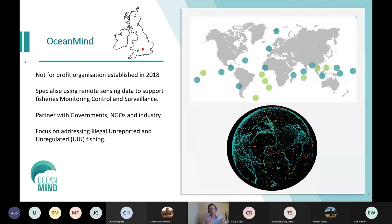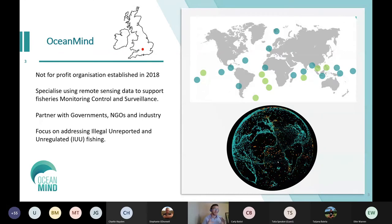I work for an organization called OceanMind, a not-for-profit established in 2018, based in Oxfordshire. We specialize in using remote sensing data to support fisheries monitoring, control and surveillance. We partner with governments, NGOs, and industry. Our primary focus is addressing illegal, unreported, and unregulated fishing. The image shown is a global view of all vessels that transmit AIS data — there are literally hundreds of thousands of vessels, and this is a global issue.